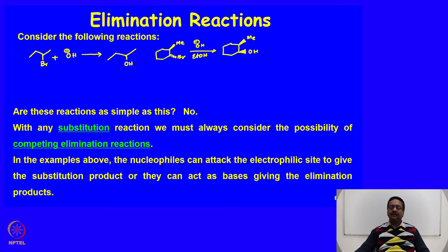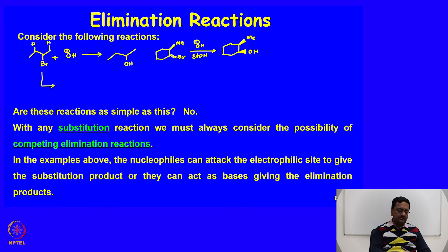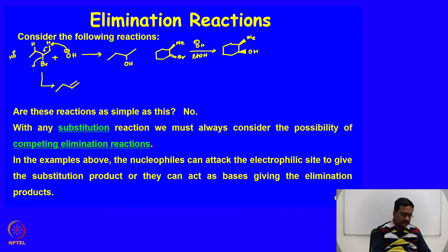Always with any substitution reaction, we must consider the possibility of competing elimination reactions. In the examples above, the nucleophile can attack the electrophilic site to give the substitution product, or it can act as a base by giving the elimination product. What we may think of is that this molecule has two hydrogens on two adjacent carbon atoms. So this OH- can abstract the proton and Br- can get removed, and we may form an alkene.